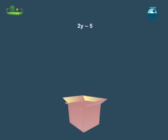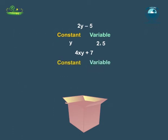The expression 2y minus 5 is formed from the variable y and the constants 2 and 5, while the expression 4xy plus 7 is formed from variables x and y and constants 4 and 7.